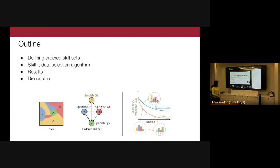The talk outline is as follows: first I'll verify the hypothesis that there are ordered skill sets the language model learns best from — defining what a skill is, how to construct this ordering, and showing that this ordering is beneficial. Next I'll discuss our data selection algorithm called Skillet, an online sampling algorithm that exploits this ordering. Finally, I'll go over empirical results and conclude with discussion points.